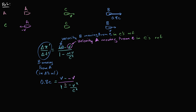We can now do the math to solve for v. Let me simplify the right-hand side of this equation. v minus negative v, that's just going to be 2v. And one minus negative v squared over c squared, well, that's just one plus v squared over c squared.